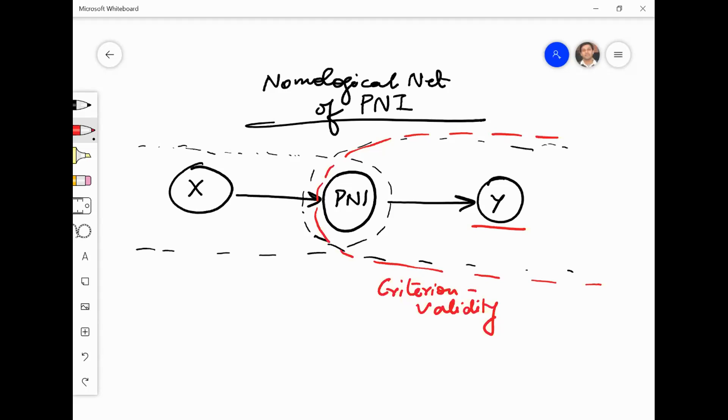I have one doubt here. So how is nomological validity different from mediation? So see, nomological validity is of the measure, remember. Whereas mediation, you are talking about the phenomena.